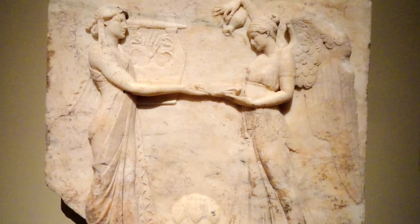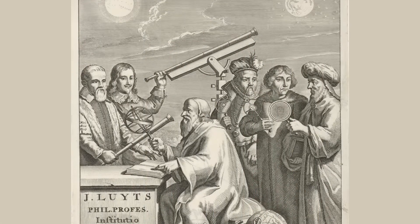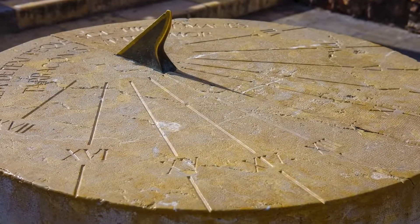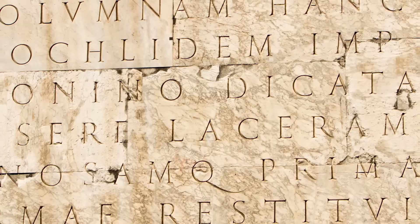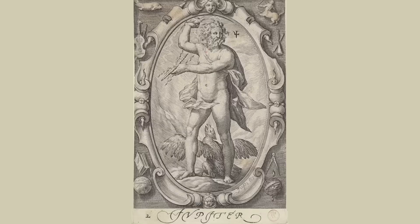The names we use now in English come from the Romans. That's because the early astronomers in Europe wrote in Latin, and Latin was the language of the Roman Empire, so we ended up with these Roman names after the Roman gods: Mercury, Venus, Mars, Jupiter, and Saturn.